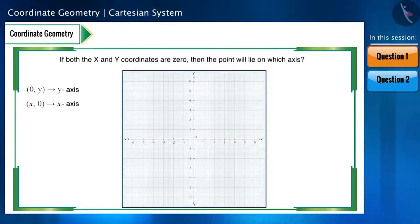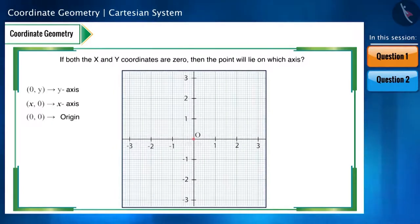So, if both X and Y coordinates are 0, then on which axis will that point lie? Friends, this is the origin which is at the center of the XY plane.